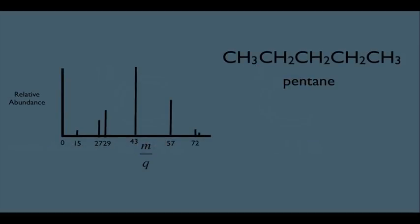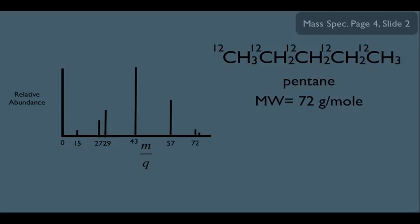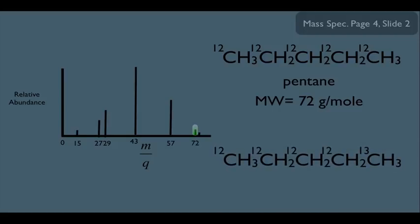Going back to our spectrum — pentane has five carbons, and there's a great chance all those carbons weigh 12, making the entire molecule weigh 72 grams per mole. However, it's also possible for one of the carbons in a pentane molecule to be carbon-13. When running a large number of molecules through the mass spec, some pentane molecules will have one carbon-13, making that molecule weigh 73 grams per mole — giving rise to the M-plus-1 peak.